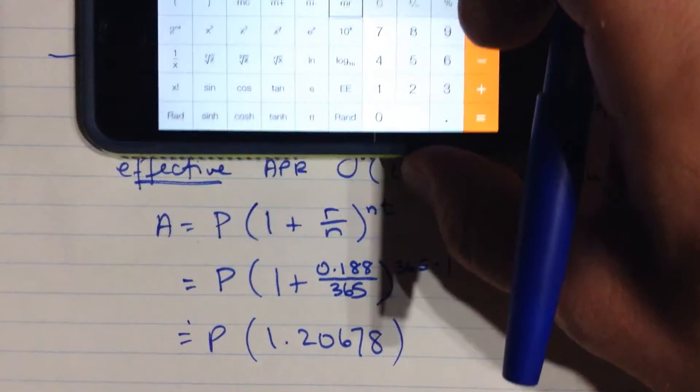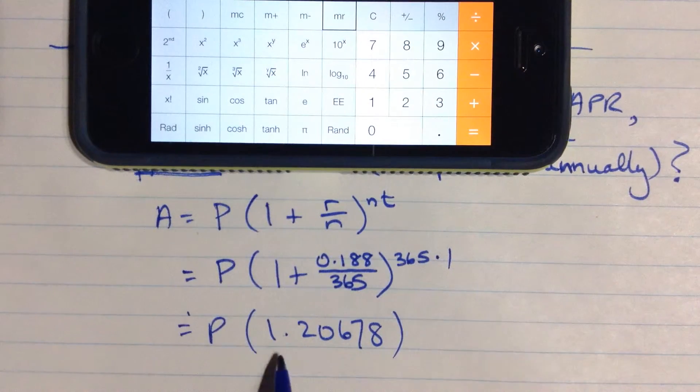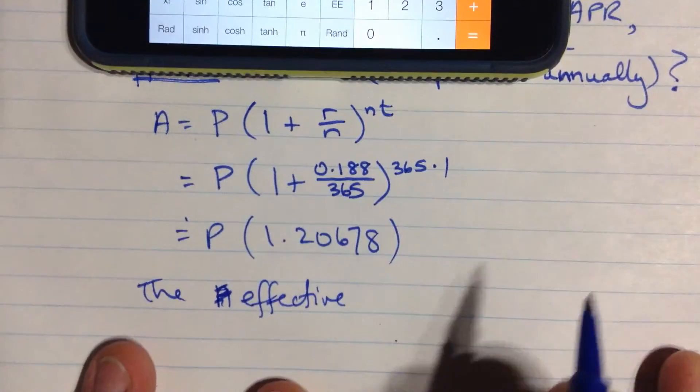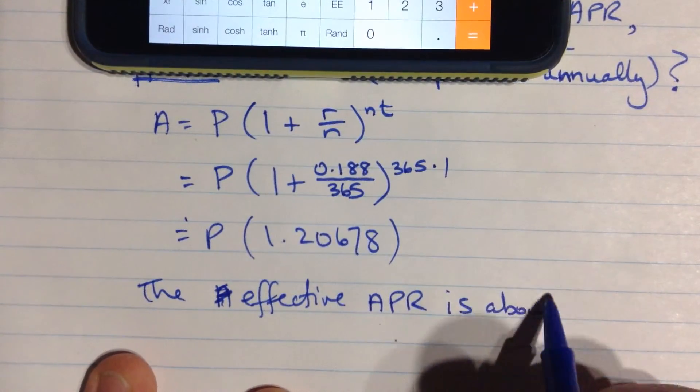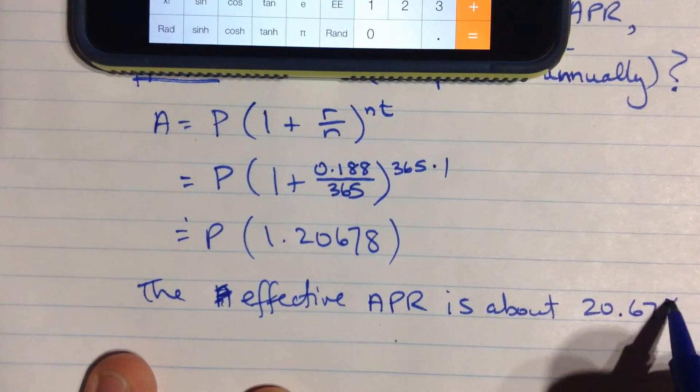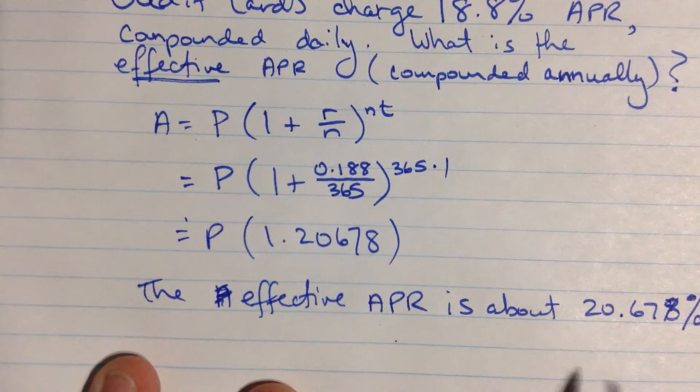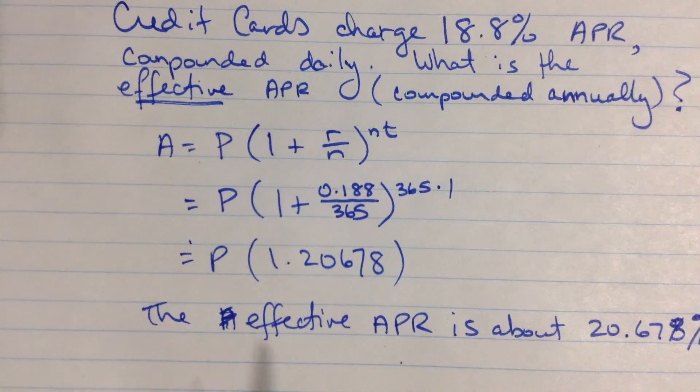So after 1 year we go from whatever principal value we have to something that's a little more than 20% bigger. So the annual, the effective, I should say, the effective APR is about 20.678%. If you had another loan that was compounded annually at 20.678%, that's the same as one that's charging 18.8% compounded daily.